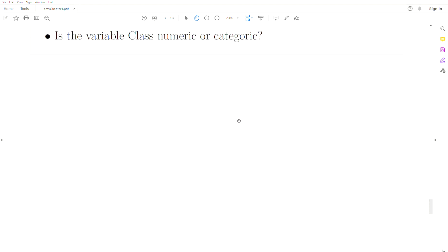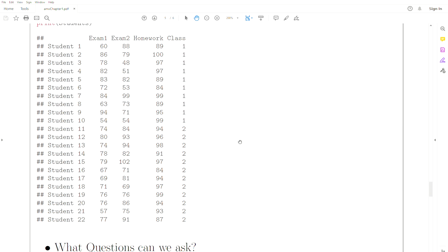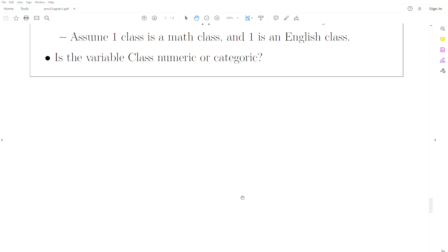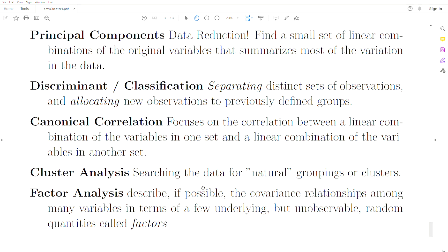Cluster analysis - are there natural groupings? And there may be a natural grouping here: maybe the students that score well in English score low in the math scores, or those that score high in the math are low in the English scores. Are there natural groupings in this data? That is cluster analysis.